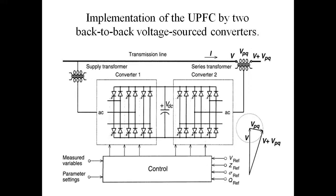This UPFC has main advantages: it can be controlled using the Shunt Compensator, where it will act as a Shunt Compensator; or this one will act as a Series Compensator; or third, it will act as both Series and Shunt Compensator. UPFC and UPQC are both different — UPFC is for controlling power flow, while UPQC is for controlling quality of power.